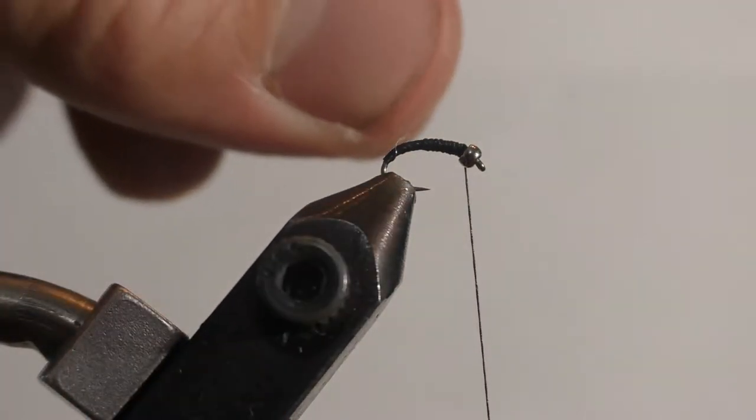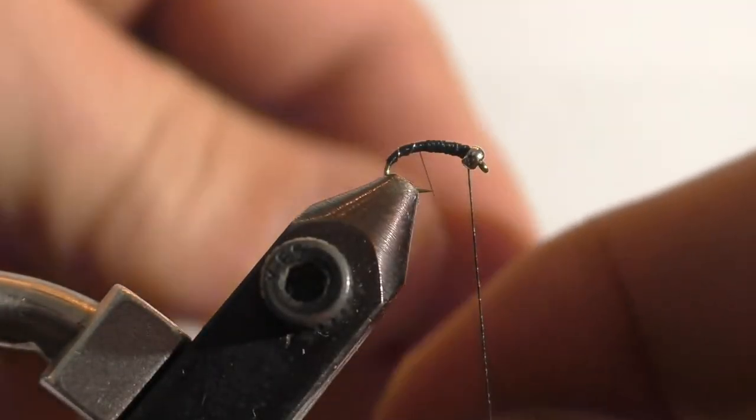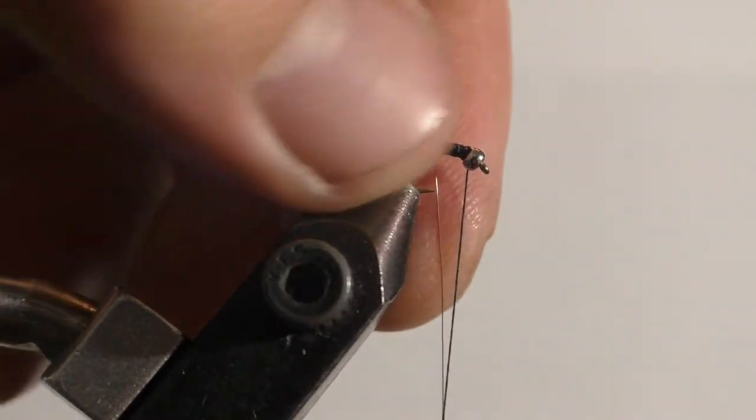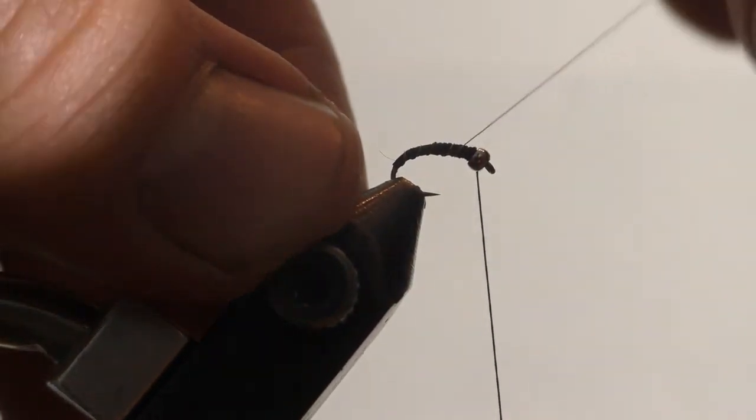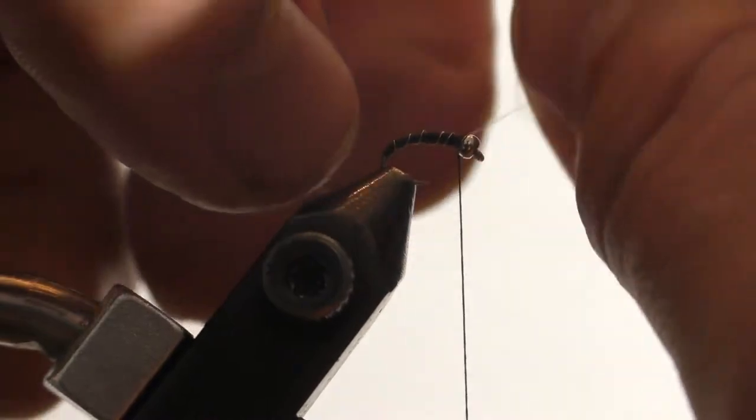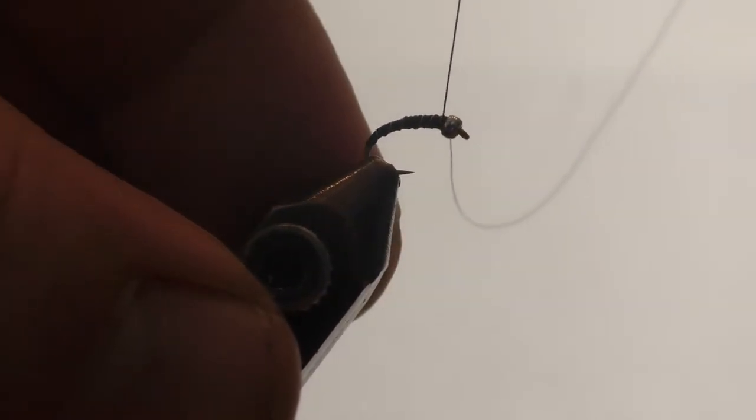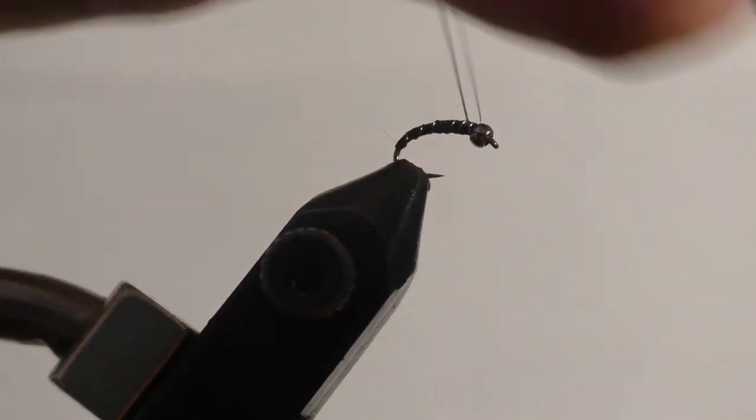Now all we're going to do is wrap this wire. Try and keep it tight to the body as you go. And we're going to create segments that are the body segments alongside this pattern. Kind of like you know how worms have rings on their bodies. Well so do a lot of aquatic insects. And that's what we're trying to represent. So now I've just pulled this wire down and out of the way. And I want to come with my thread behind that wire once. Twice. Okay. So now it's locked into place.